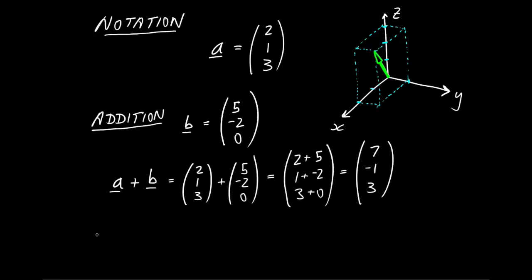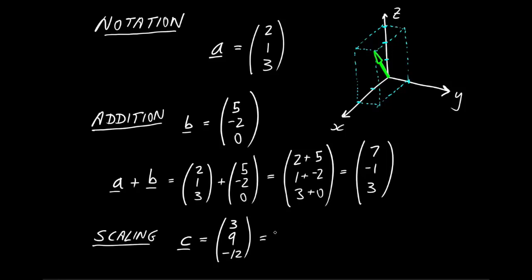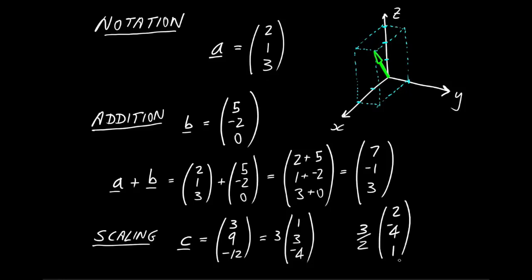How about scaling a vector? We can multiply a vector by a simple number, which multiplies each component. For example, (3, 9, -12) — each component is a multiple of 3, so we can write it as 3 × (1, 3, -4). Equivalently, if given (3/2) × (2, 4, -4), we just multiply component by component to get (3, 6, -6) — wait, 3/2 times 2 is 3, 3/2 times 4 is 6, 3/2 times -4 is -6. We can scale our vectors by a number in this simple way.